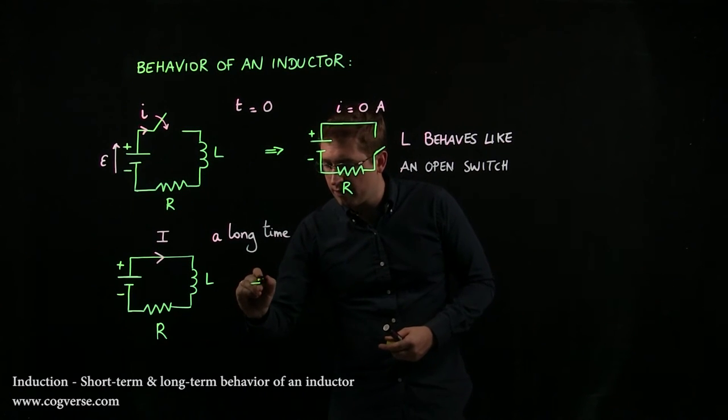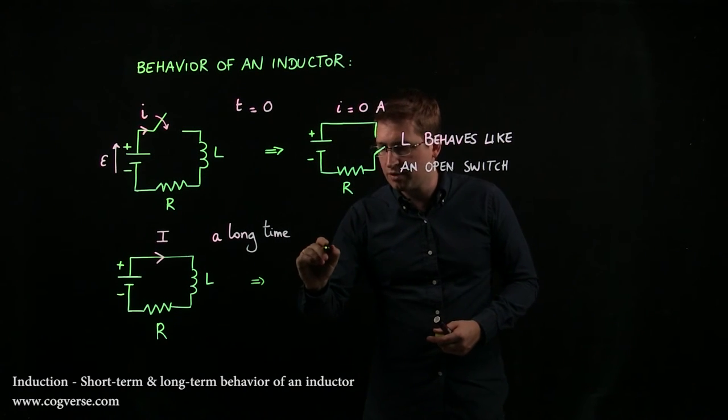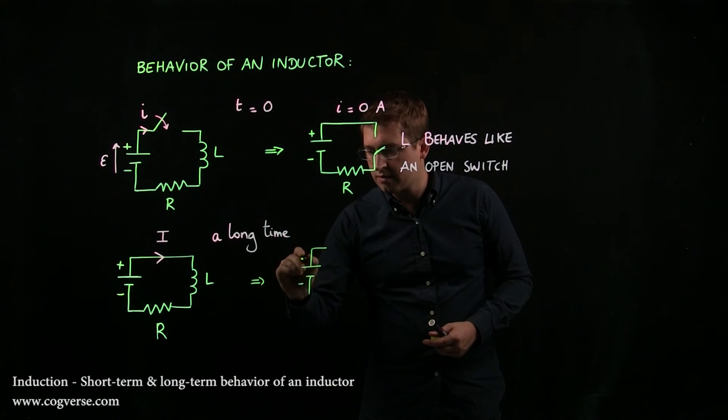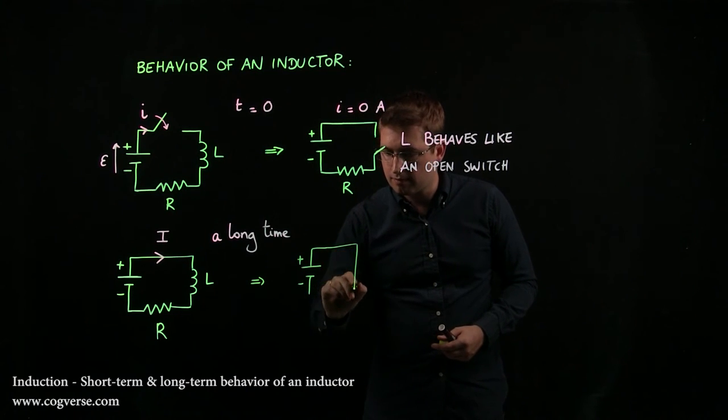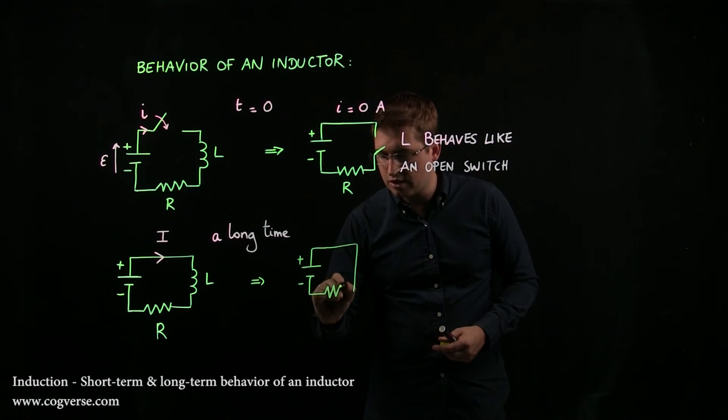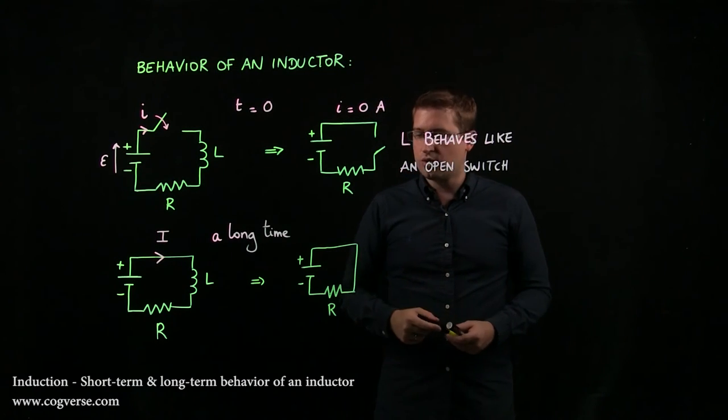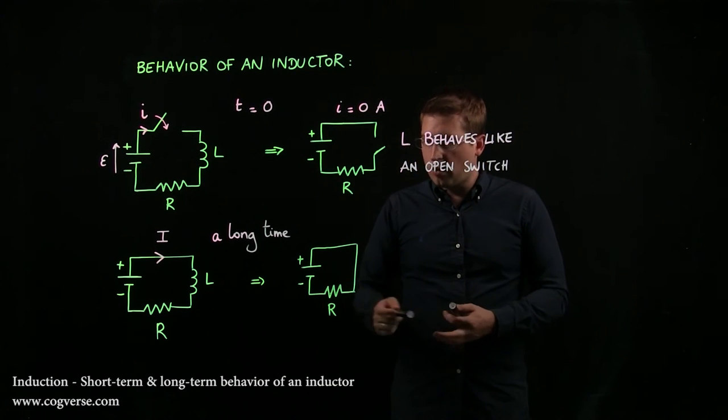And therefore, after a long time, I can simplify my circuit and just draw this. It is as if I just had a battery connected to a resistor because L behaves like a wire.